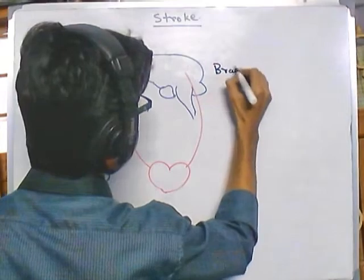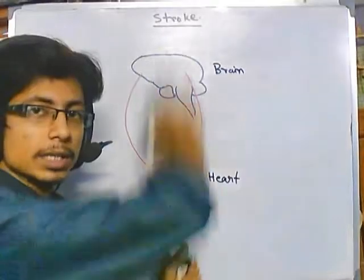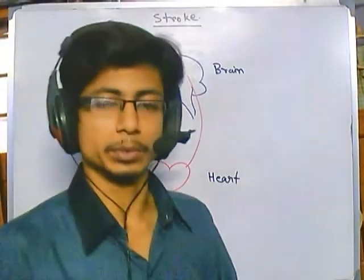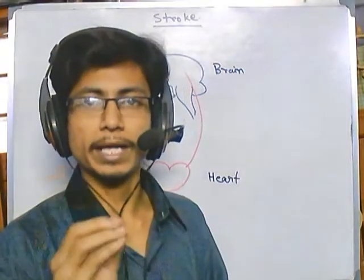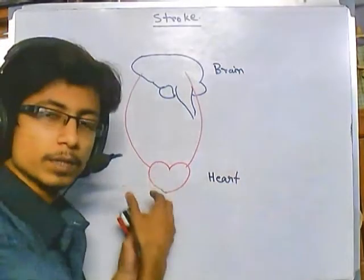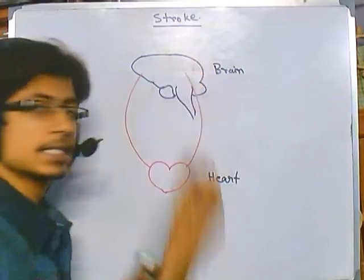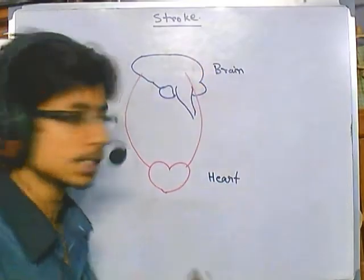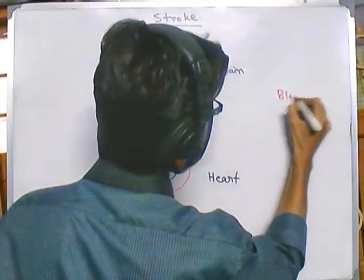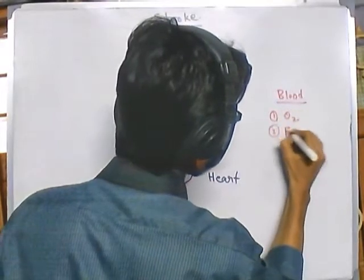When we are talking about stroke, we are talking about the blood flow between these two important parts — the heart and the brain. Now what is blood actually doing? Blood is supplying nutrients as well as oxygen from our lungs to all the rest of the cells of our body, like cells of the brain, liver, and kidney. The job of the blood is to supply oxygen and food.